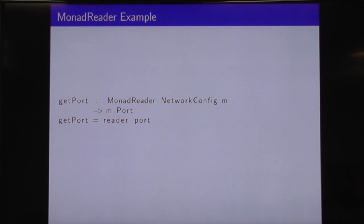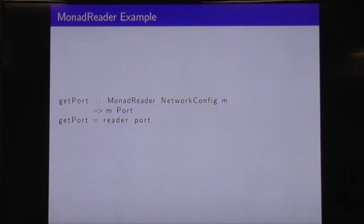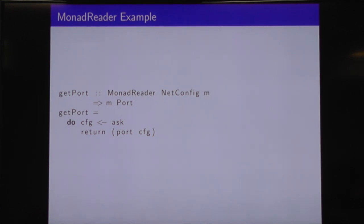How would we use something like this? We could write a MonadReader action that lets us get at the port inside of our NetworkConfig. If we have an instance MonadReader of NetworkConfig for M, then we can get an action that is M of Port for any M that is a MonadReader that can read NetworkConfigs. We've gone from talking about one concrete monad to any monad satisfying this MonadReader of NetworkConfig constraint. If we expand it out, we call ask to get the NetworkConfig, use the port accessor, and return it into the monad.